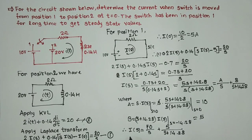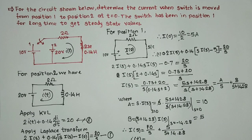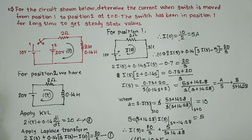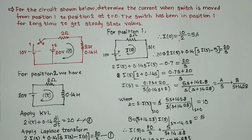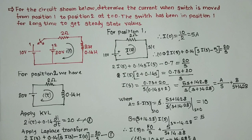Taking the inverse Laplace transform, i(t) equals 10 plus 5·e^(minus 14.28·t). The unit for current is amperes, so i(t) equals 10 plus 5·e^(minus 14.28·t) amperes. This is the final answer.